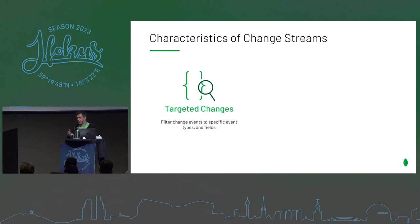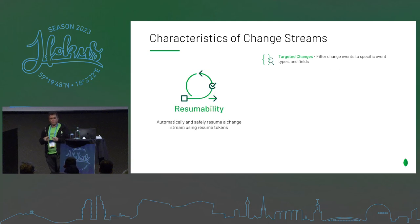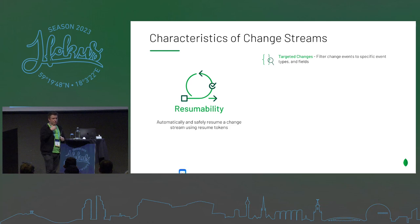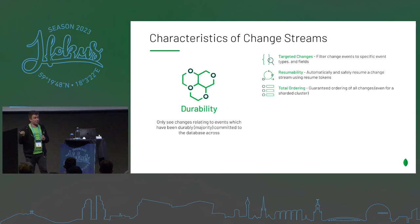Let's look at some features. Targeted changes means you can listen to specific fields — if a specific field changes, you only get that event triggered. There's also resumability: what happens if one of the nodes goes down? In MongoDB we have a three-node replica set — a primary and two secondaries. If a node goes down you can still get events using resumable tokens to ensure you don't lose any events. Events arrive in total ordering — they come in the order the changes actually happened, not randomized.